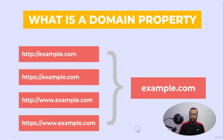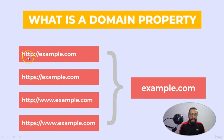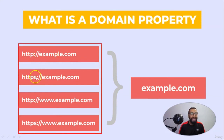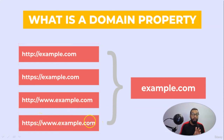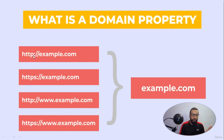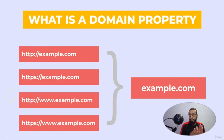Here you can see a website example.com — http://example.com, https://example.com, http://www.example.com, and https://www.example.com. This shows your website structure — whether you have a security protocol or not — and domain property will cover each and every aspect of your website. This is about the domain property setup.